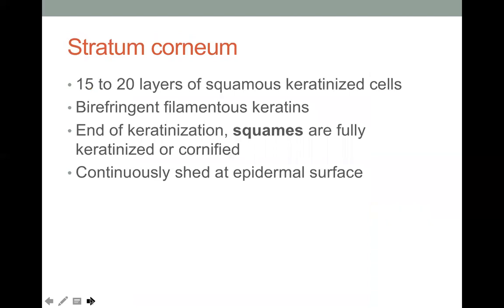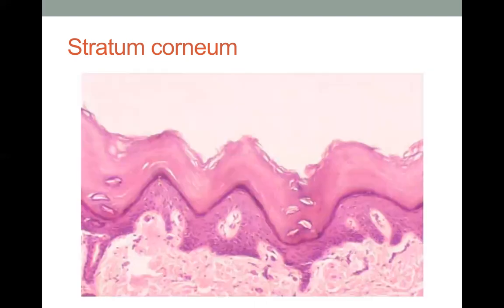The stratum corneum is composed of 15 to 20 layers of squamous keratinized cells. These are described as birefringent filamentous keratins, and this is where keratinization ends. The squames are fully keratinized — also called cornified. The stratum corneum is continuously shed at the epidermal surface.